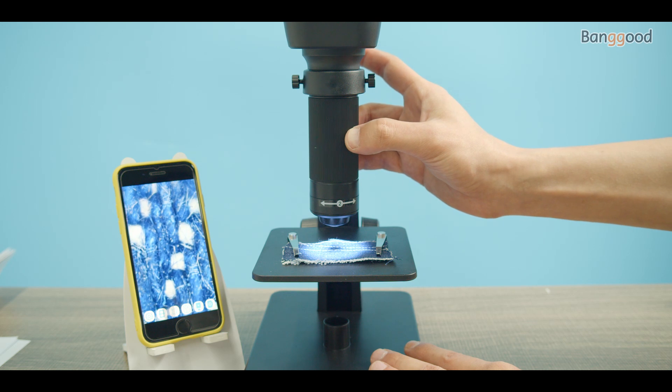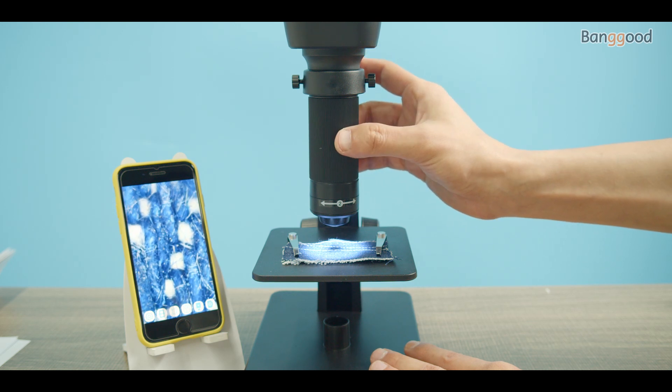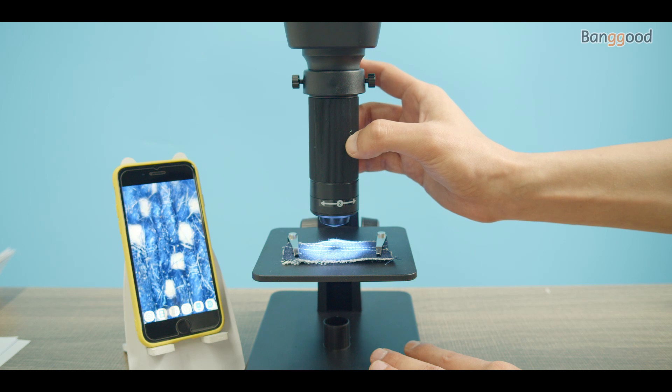Lens number two can provide up to 2000 times magnification, ideal for when you need to see more details than with number one lens.